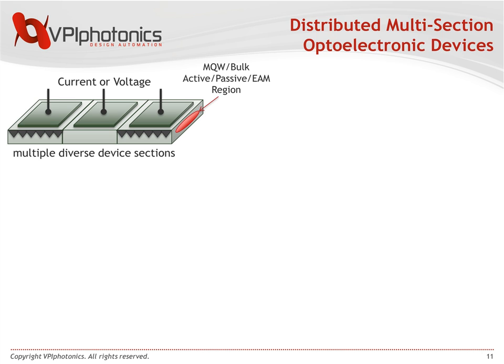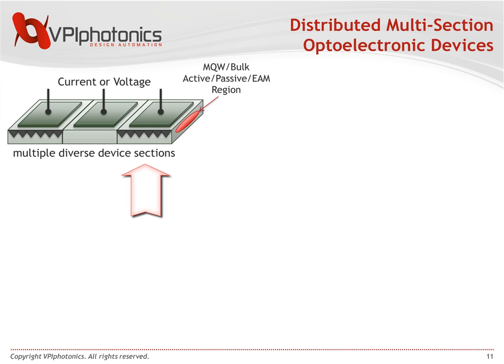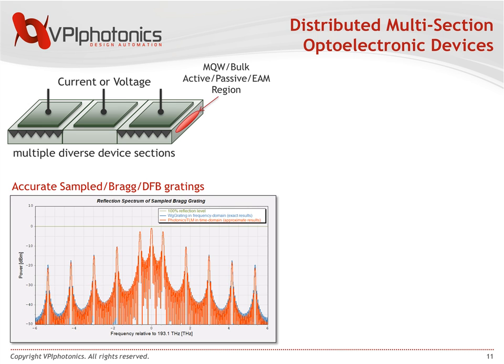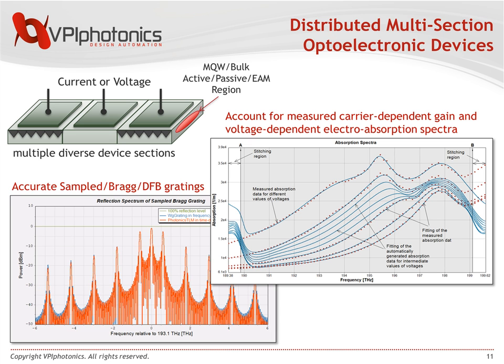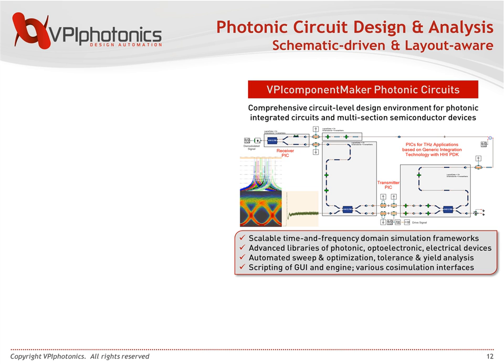One example is multi-section optoelectronic devices. We have models that allow you to set up multiple diverse device sections — active gain blocks, passive blocks, or electro-absorption blocks — each with individual pads that can be driven by current or voltage, so you can build arbitrary structures. We also allow accurate modeling of sampled gratings and DFB-based gratings, and account for measured data from carrier-dependent gain and carrier-dependent electro-absorption spectra. More details will be given tomorrow by my co-worker at 3 o'clock.